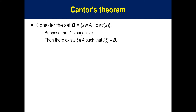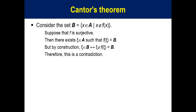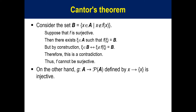Suppose f is surjective. Then there exists ε which is an element of A such that f(ε) equals B. But by construction, if ε is an element of B, then it means ε is not an element of f(ε) which equals B. Therefore, this is a contradiction. Thus, f cannot be surjective. On the other hand, function g mapping A to P(A) defined as x to itself is injective. Therefore, card P(A) is larger than card A.